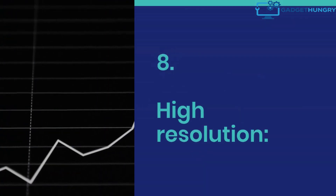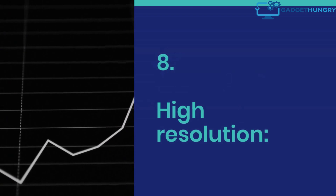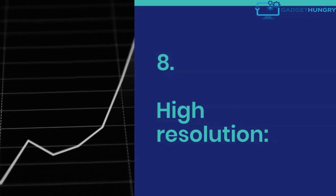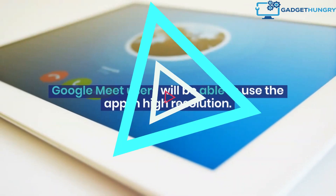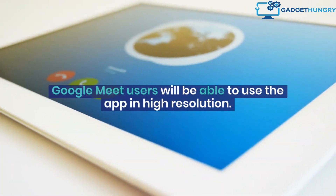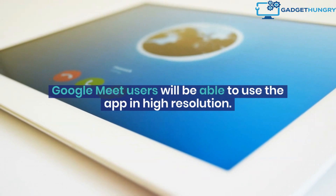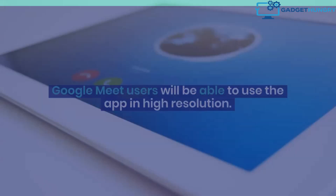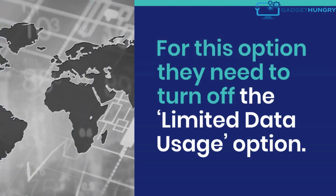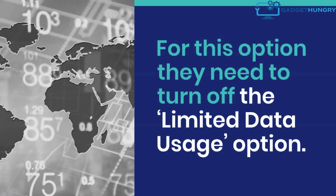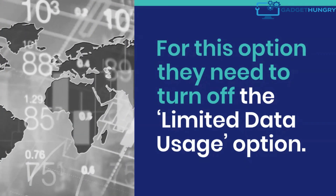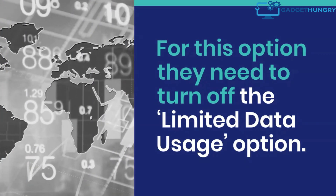8. High resolution. Google Meet users will be able to use the app in high resolution. For this option, they need to turn off the limited data usage option.